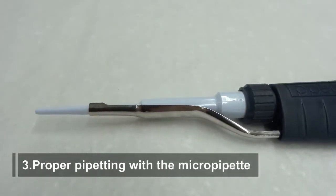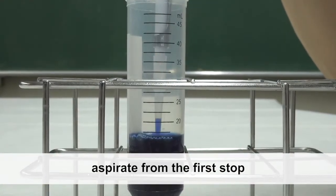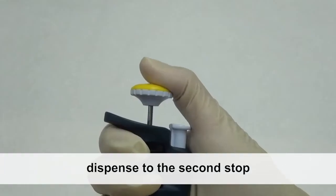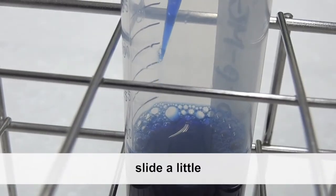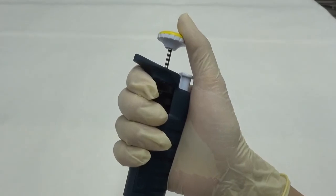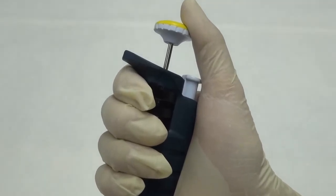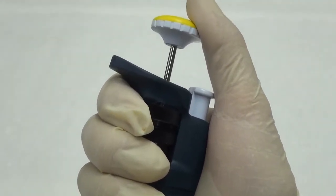Proper Pipetting with the MicroPipet. A Pithy Formula: Aspirate from the first stop, dispense to the second stop and slide a little. Now I will introduce the proper pipetting technique stepwise using the P200 as an example.